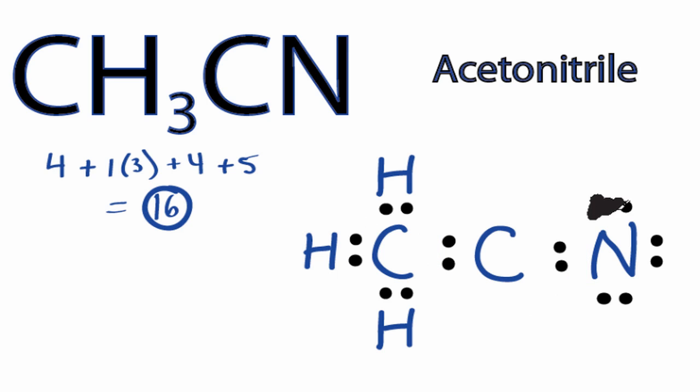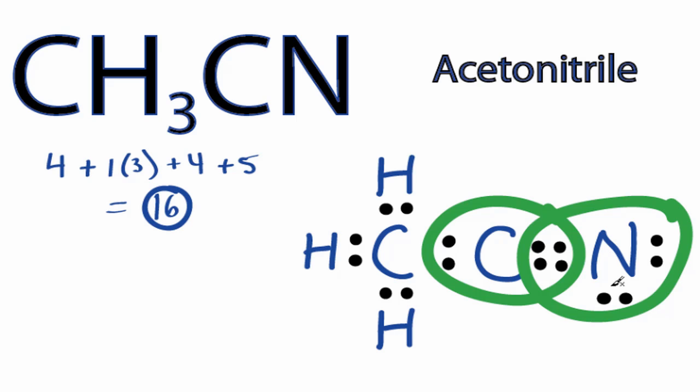We can take two valence electrons from the nitrogen here, and move it to the center to form a double bond. Now, nitrogen still has 8, but carbon has 6, so we're getting close to an octet for carbon.